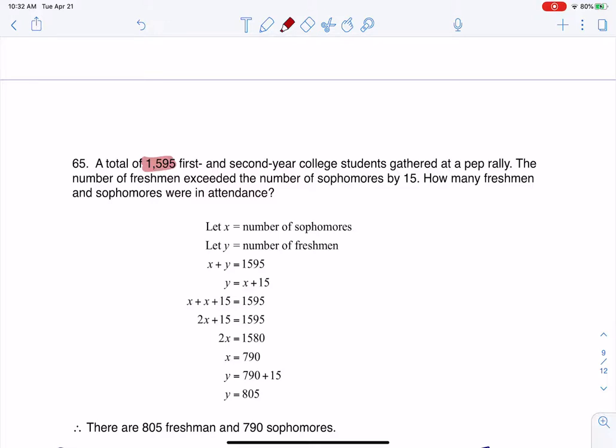The number of freshmen exceeded the number of sophomores by 15. How many of each, freshmen and sophomores, were in attendance?